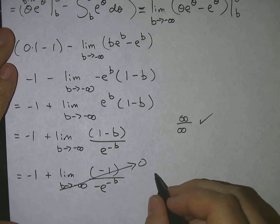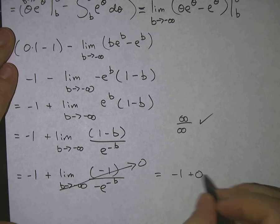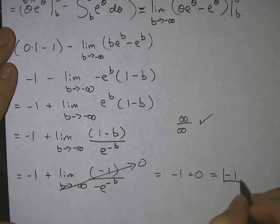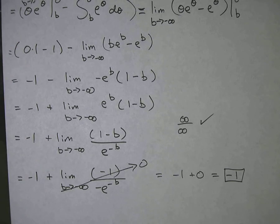So the whole thing is negative one plus zero, which is just negative one. That's your answer.